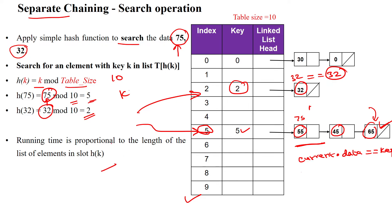The running time is proportional to the length of the list of elements. The search moves until the end of the list to find the data.